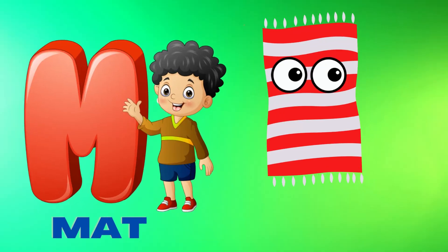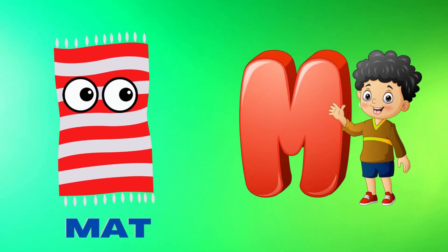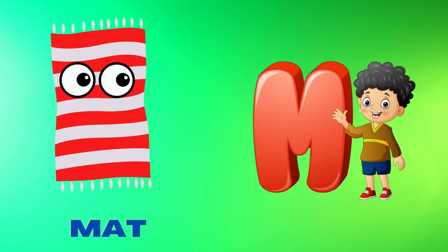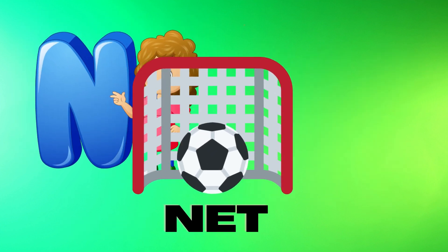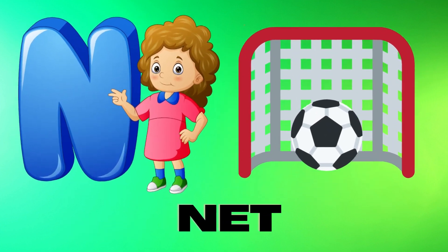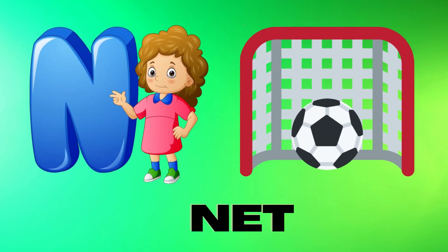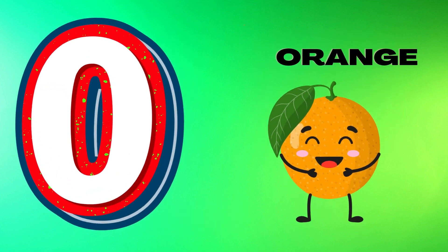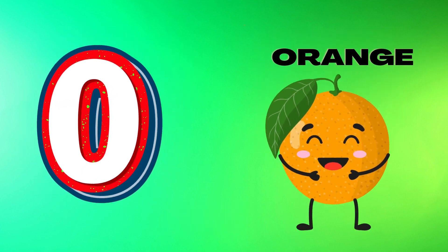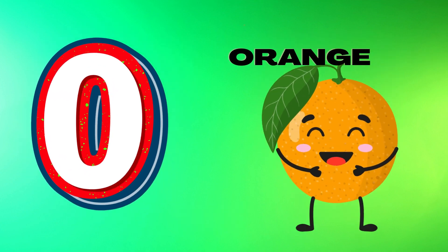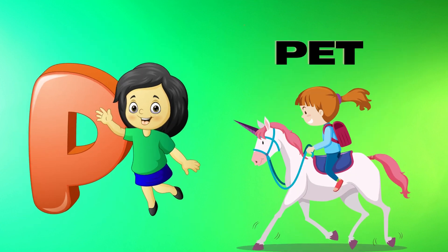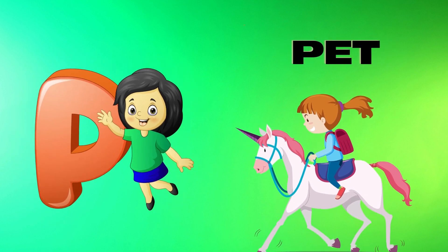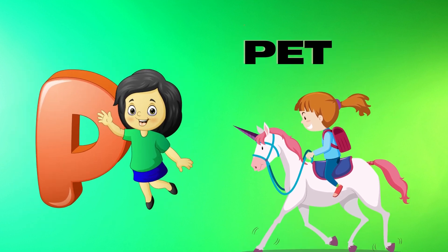M is for mat, m-m-mat. N is for net, n-n-net. O is for orange, o-o-orange. P is for pet, p-p-pet.